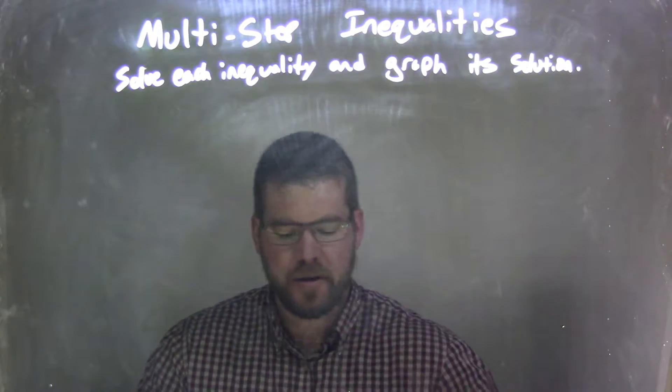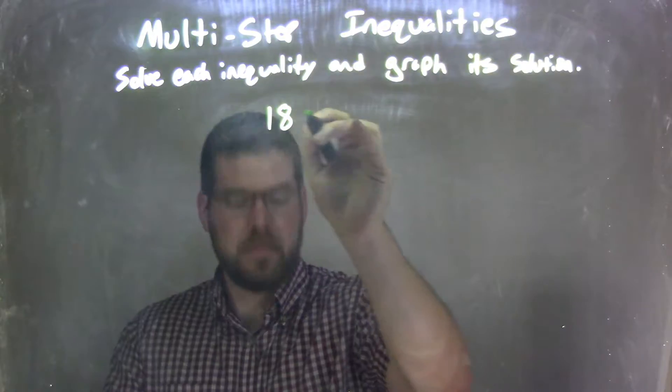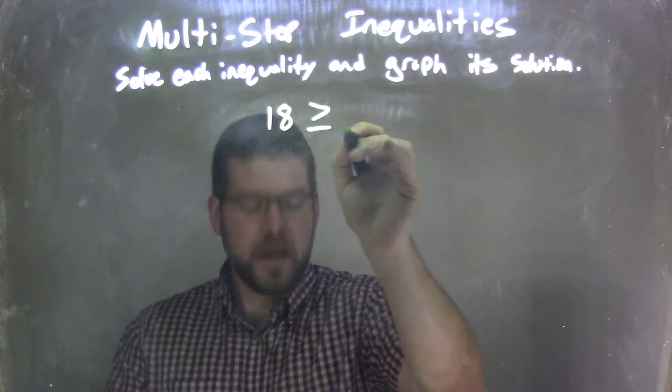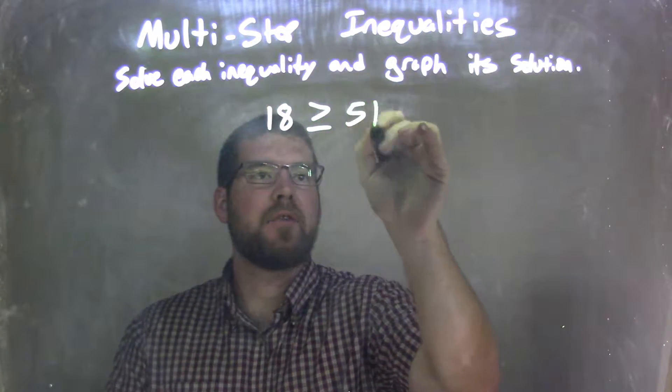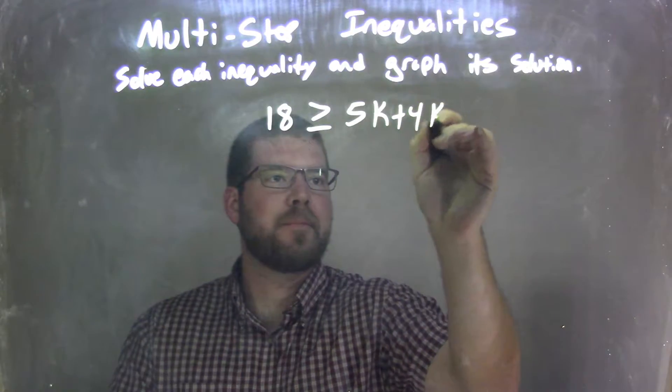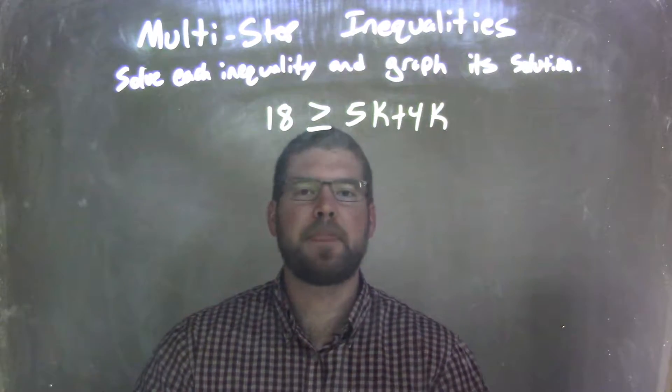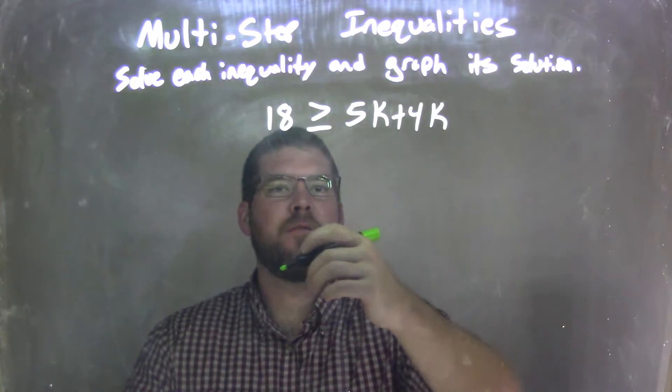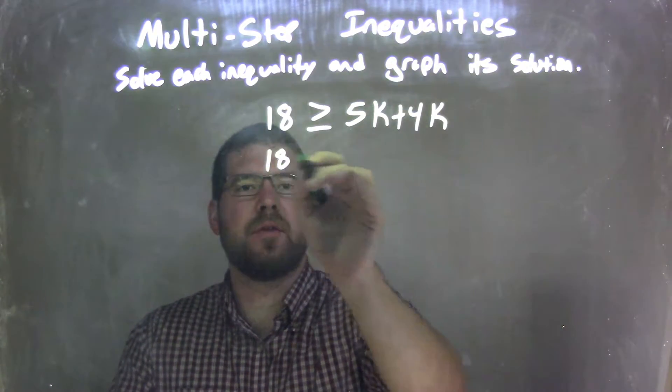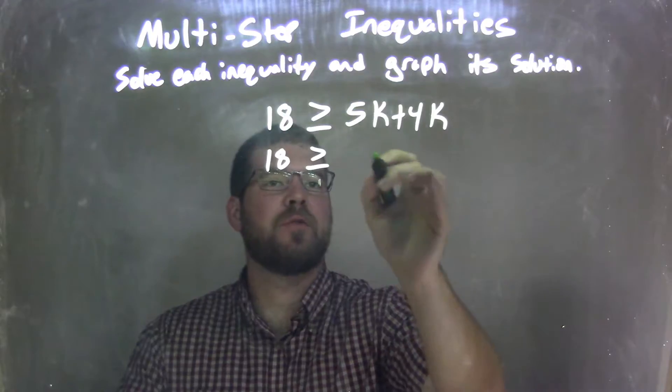So if I was given this inequality, 18 is greater than or equal to 5k plus 4k, I'm going to combine my 5k and 4k together. So we have 18 greater than or equal to 5k plus 4k is 9k.